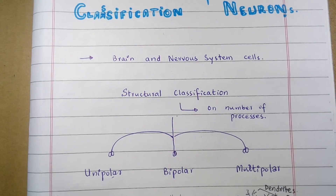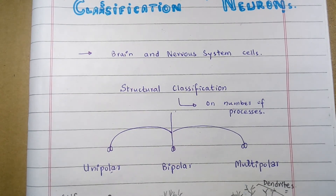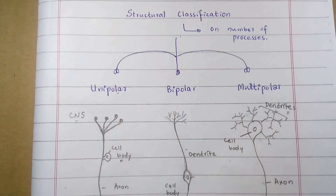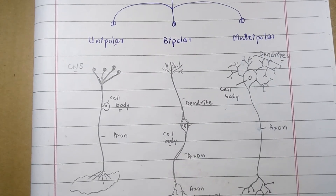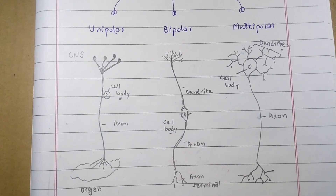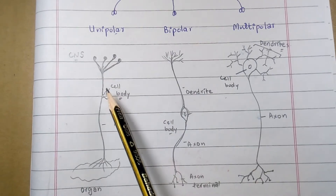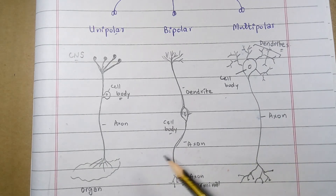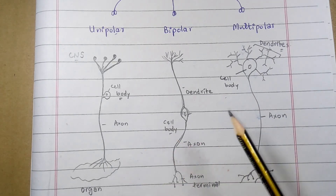My focus in this video is on the structural classification of these three types of neurons — unipolar, bipolar, and multipolar. I will show you the diagrams of the unipolar, bipolar, and multipolar neurons with their structural components. This is a diagrammatic representation of the structural classification of neurons, showing the unipolar neuron, bipolar neuron, and the multipolar neuron.